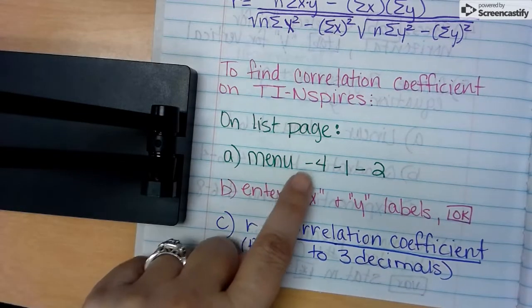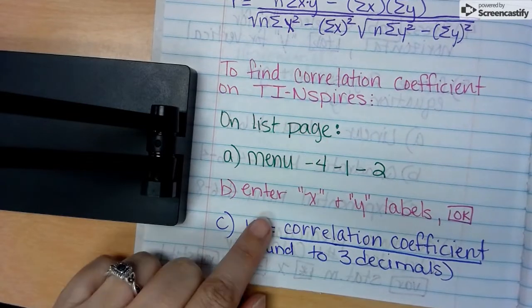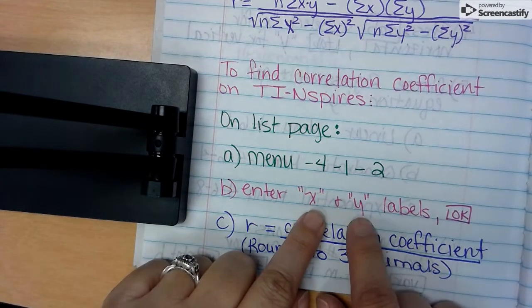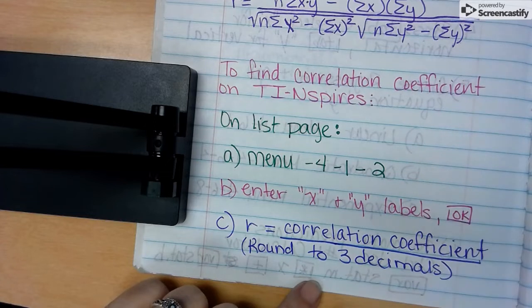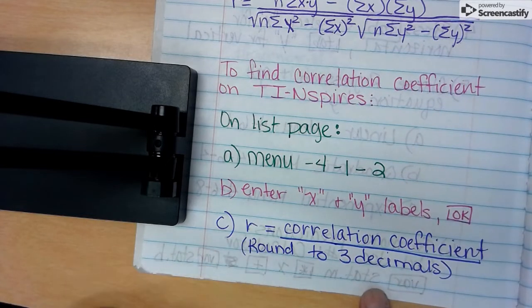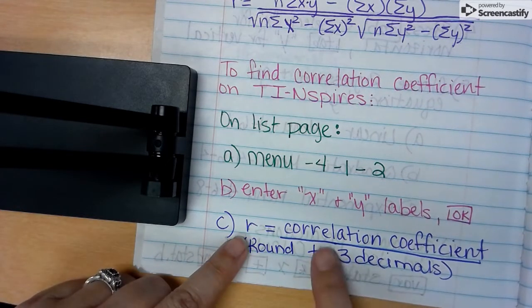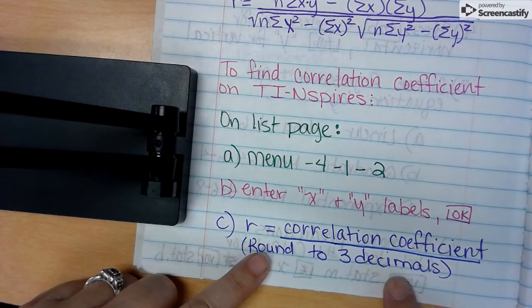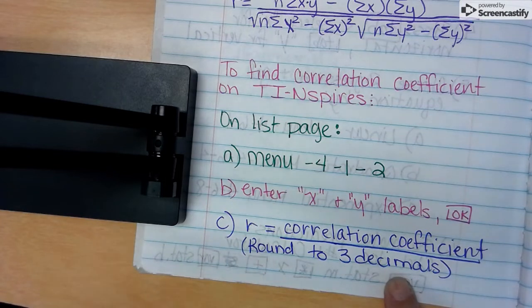If you go back to our List page, push Menu 4-1-2, and then enter whatever you called your x and y, push the Okay button. If you scroll down in the list, you will find r - that is the coefficient we want, rounded to three decimal places.